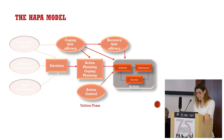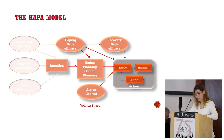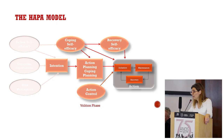Action planning is a mental simulation of when, where, and how one intends to perform the behavior. The anticipation of potential obstacles and preparation strategies for dealing with such barriers is coping planning. Action control is a newer construct in the model and is an ongoing regulatory process which partially occurs during behavioral enactment. As different tasks have to be mastered during health behavior change, several phase-specific self-efficacy beliefs are proposed.